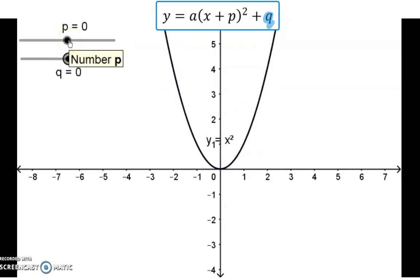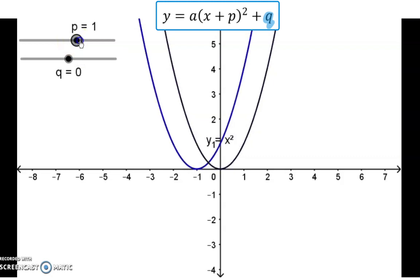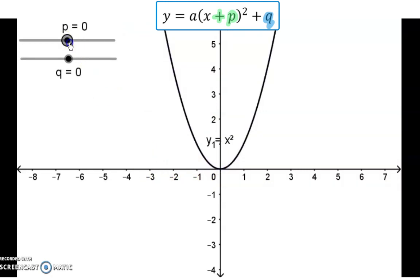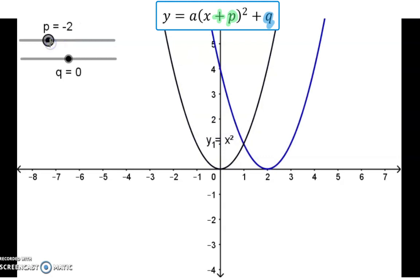Let's see what happens if we add a constant value to x inside the brackets. Even though we added a positive value to x, the graph moved in the negative direction on the x-axis. Similarly, when we add a negative value to x, the graph will move in the positive direction on the x-axis.